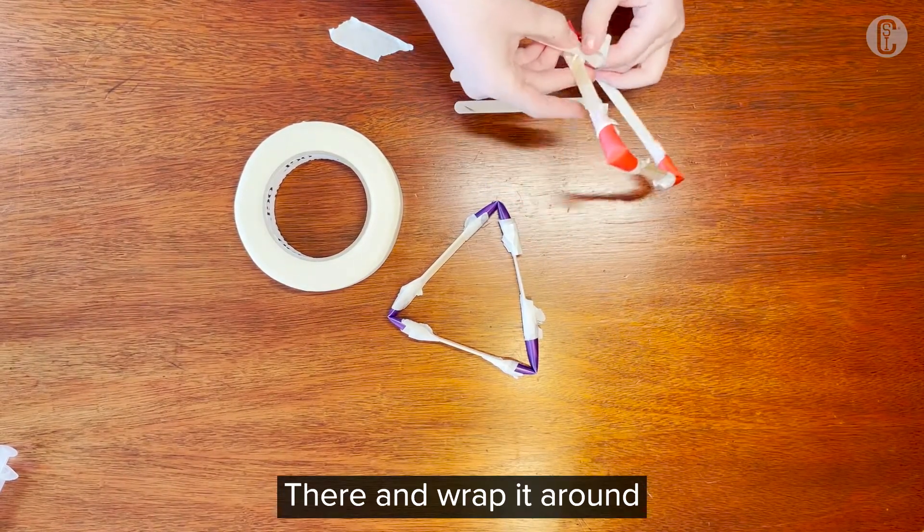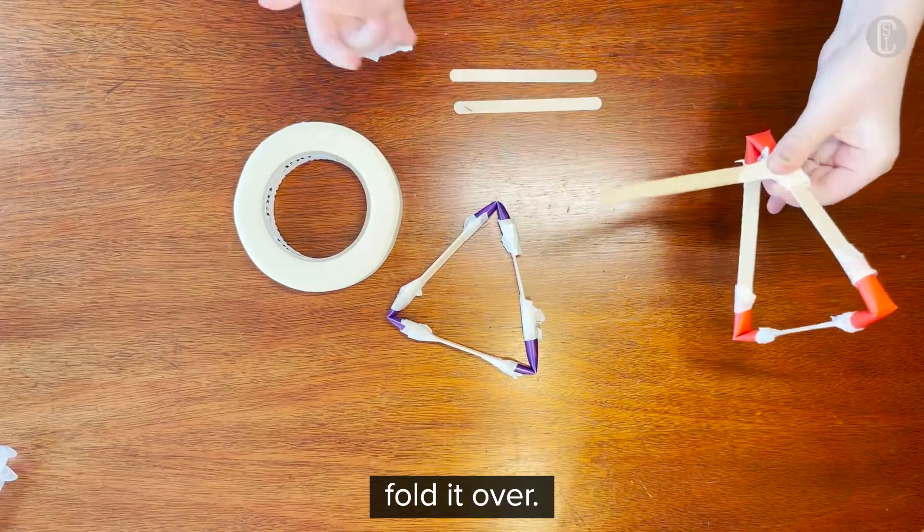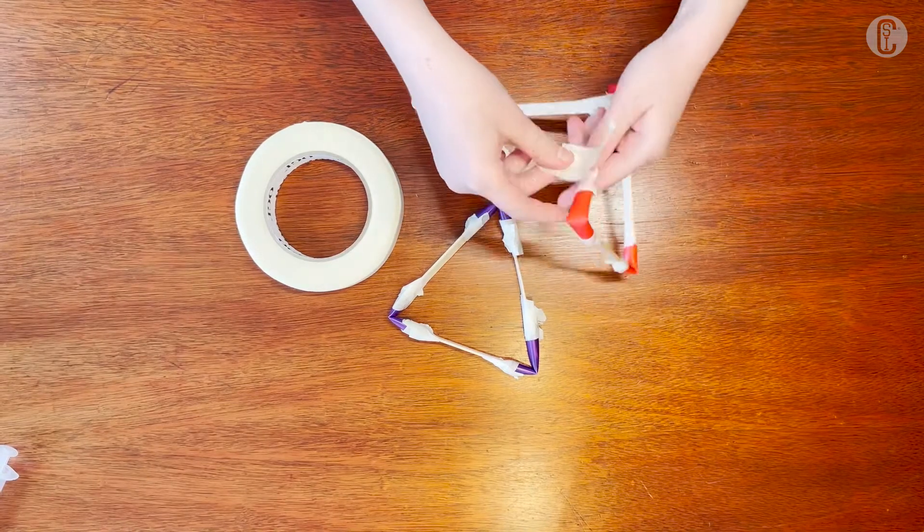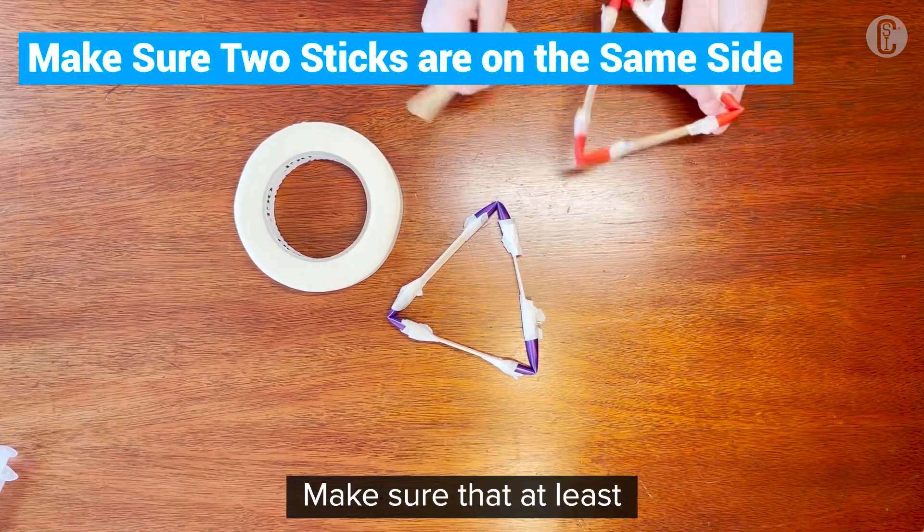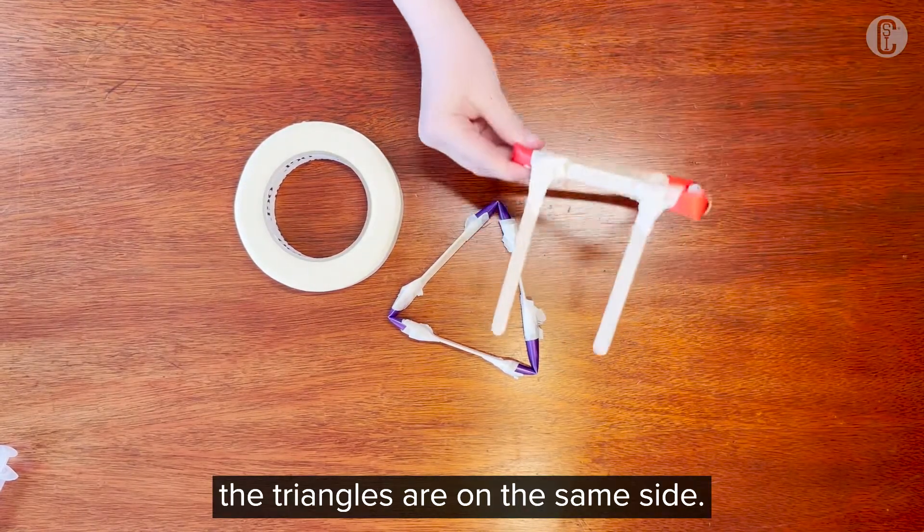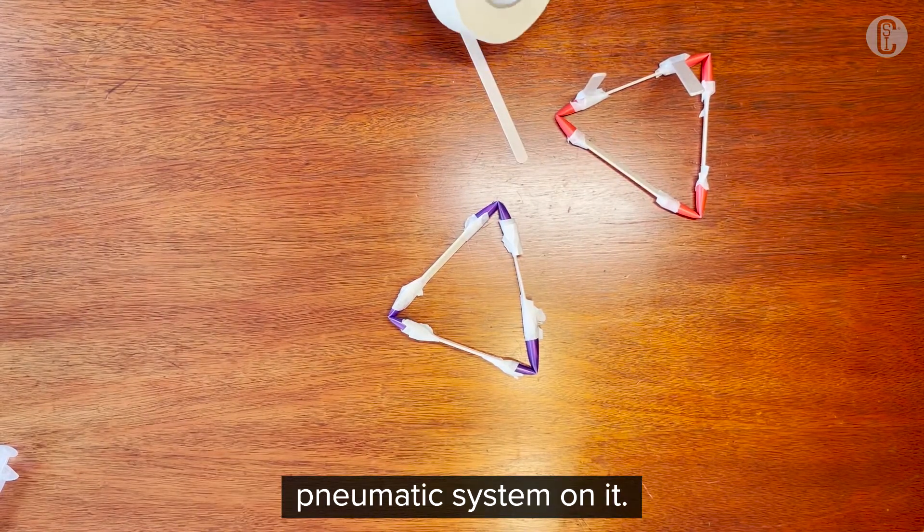There, and wrap around. Do that and move it over. Make sure that at least two of the triangles are on the same side because you'll need that to put the pneumatic system on it.